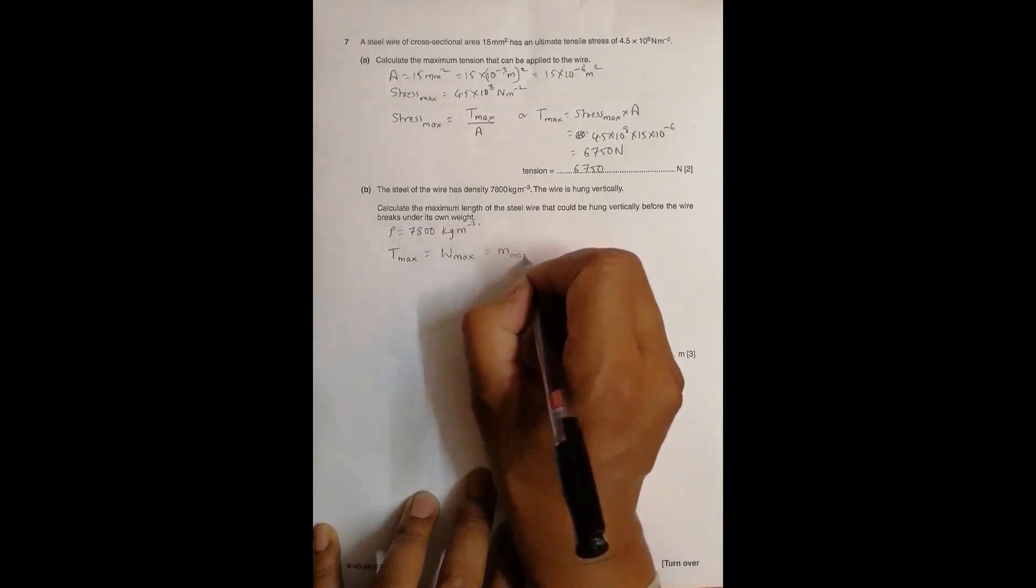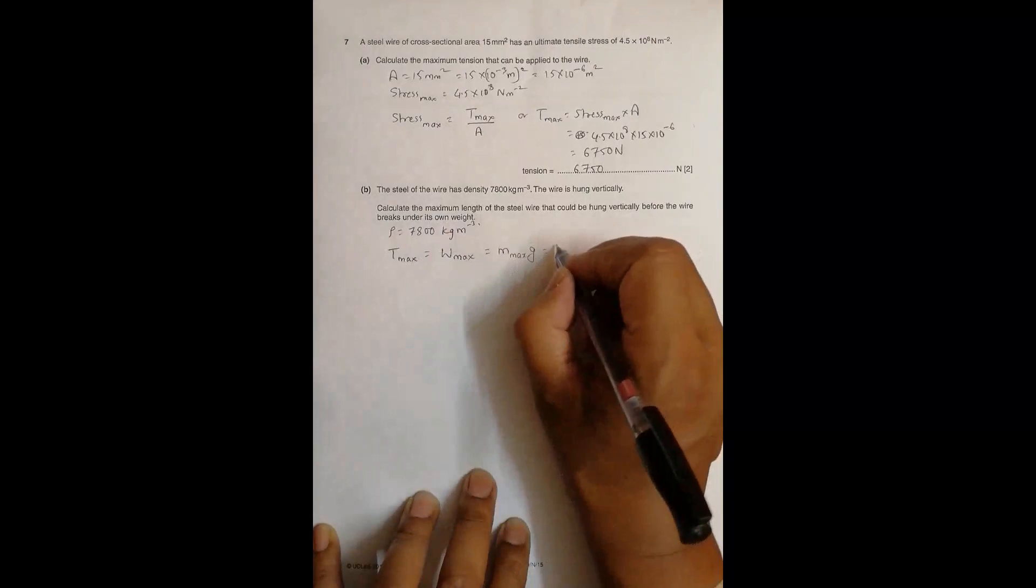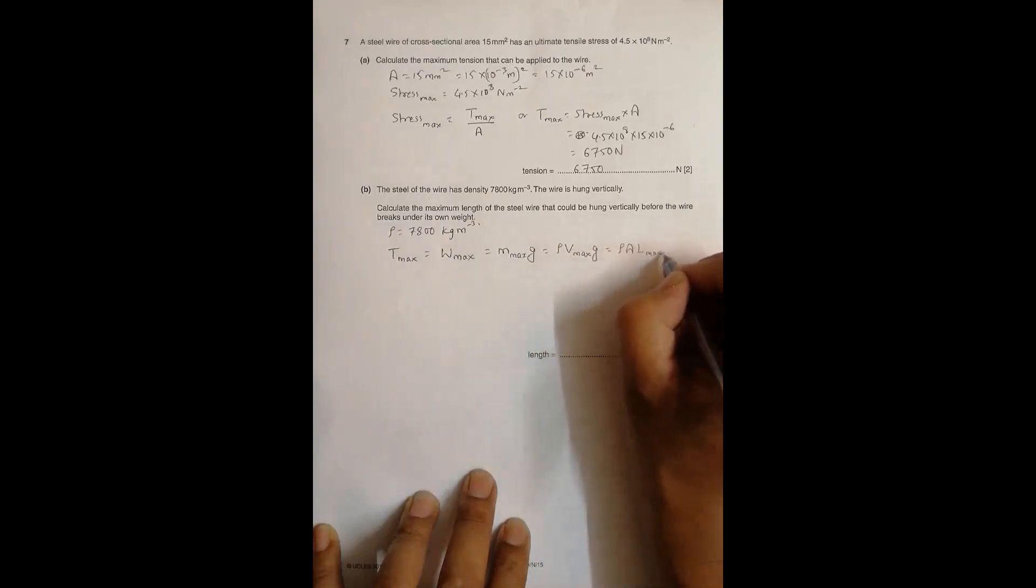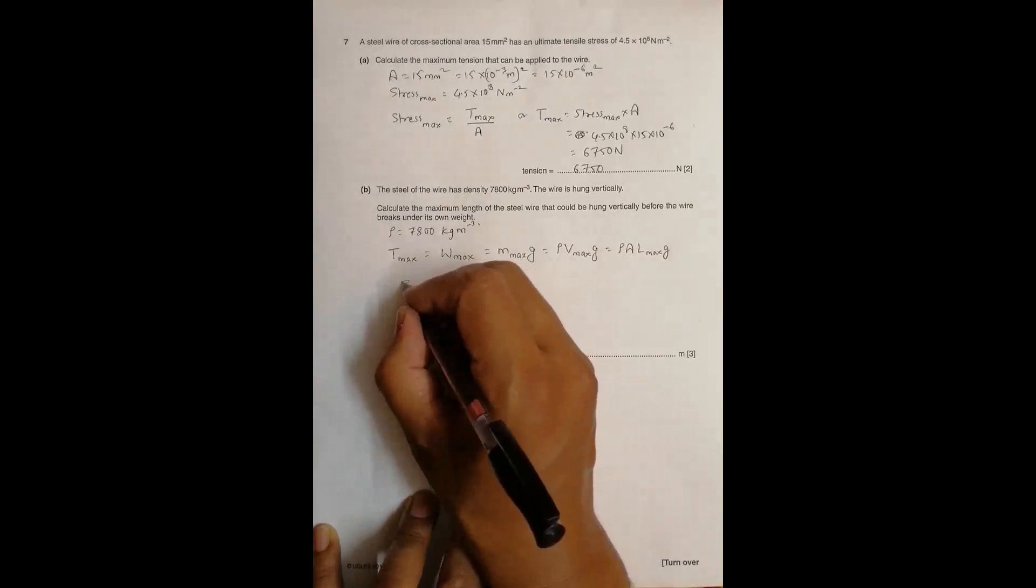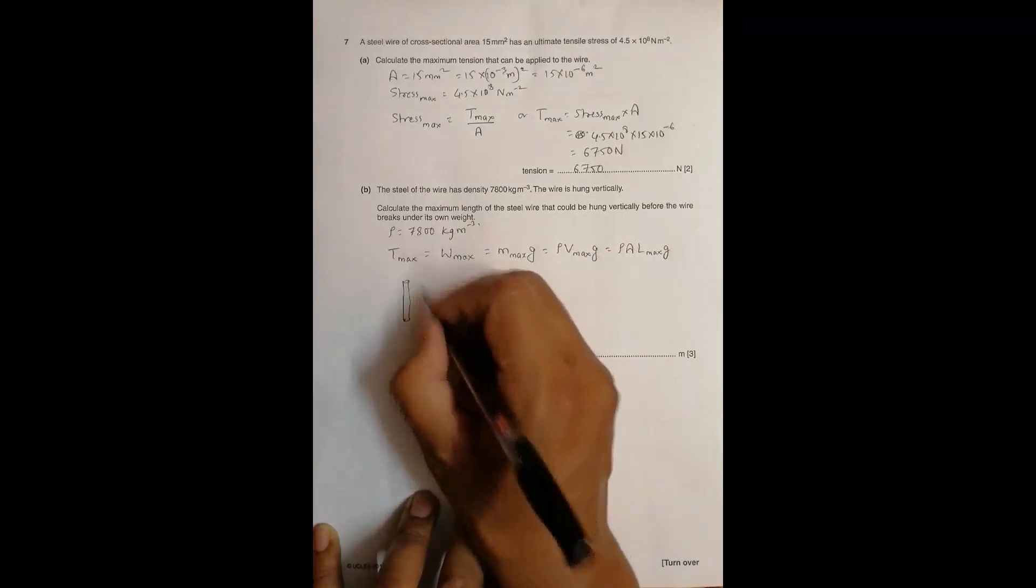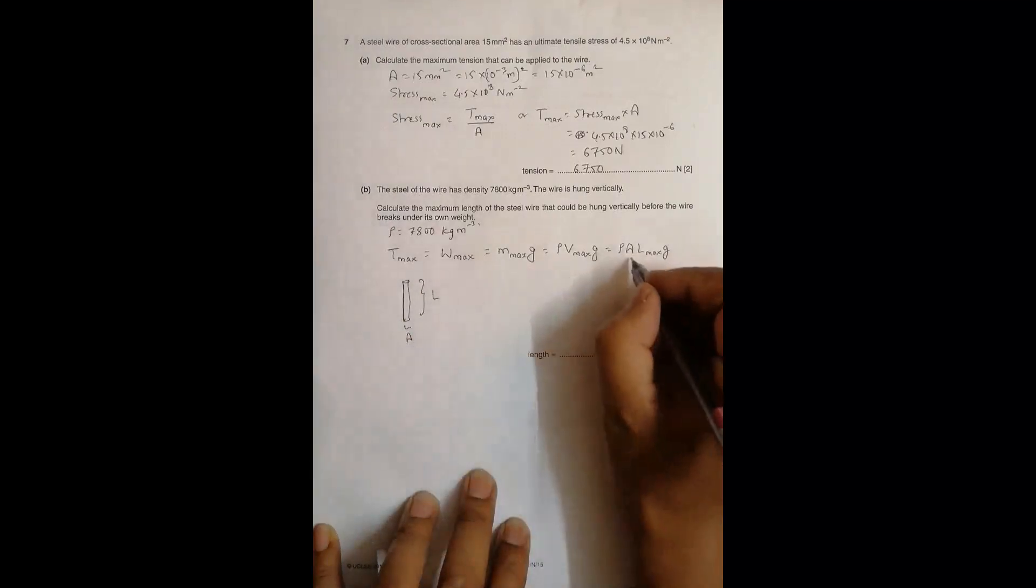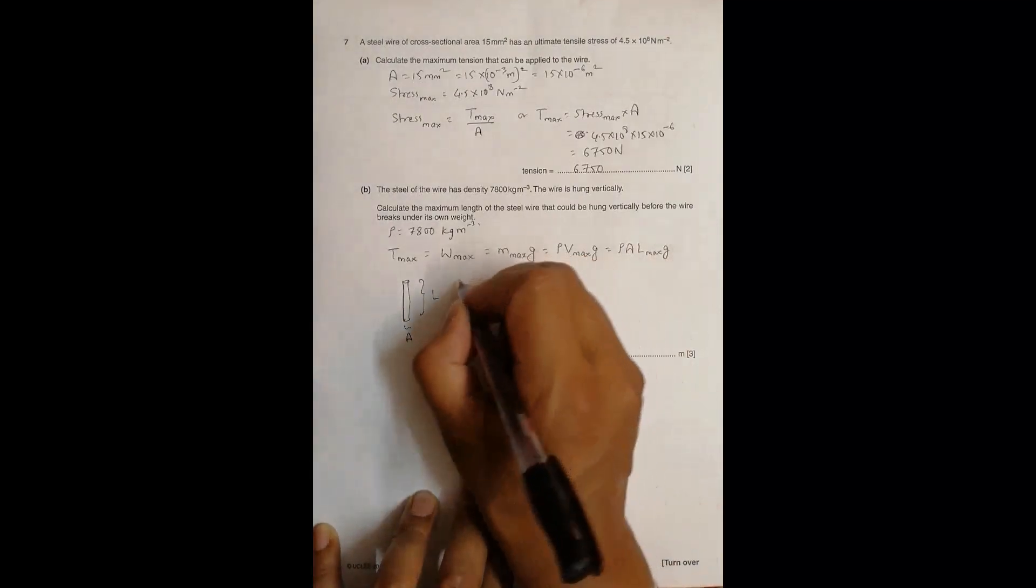That's equal to rho times volume maximum times g, and this volume is equal to rho times A times length maximum times g, because in a cylindrical wire the volume is equal to the length times the cross-sectional area. So A times L max times g.